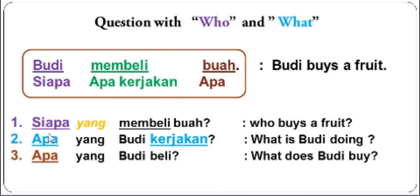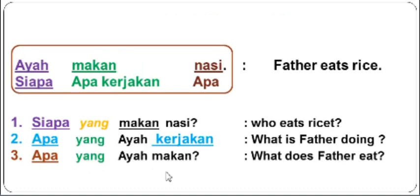Now let's put them in sentences: 'Siapa yang membeli buah?', 'Apa yang Puti kerjakan?', 'Apa yang Puti beli?'. Next, the pattern is just like before, as you can see. So the questions can be: 'Siapa yang makan nasi?', 'Apa yang ayah kerjakan?', 'Apa yang ayah makan?'